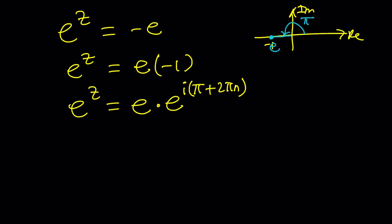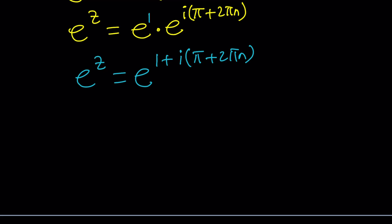So here's what we need to do. Something that we need to do. Write this as e to the power 1, and then add the exponent so we can solve for z. From here, we get 1 plus i multiplied by pi plus 2 pi n. And since the bases are equal, the exponents are equal, everything is equal. So from here, we get z equals 1 plus i times pi plus 2 pi n.